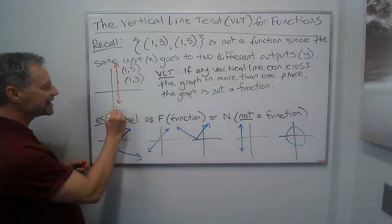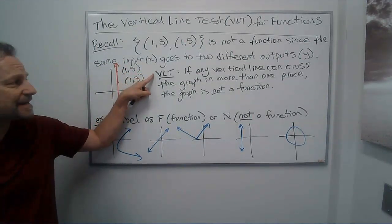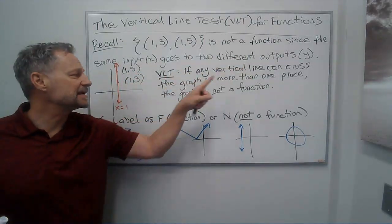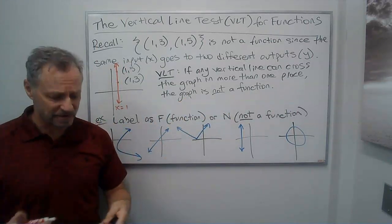This is, in fact, the line x equals 1. That's the vertical line test. It says if any vertical line can cross the graph in more than one place, the graph is not a function.